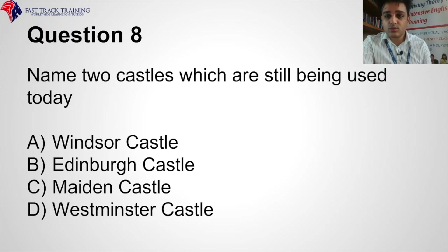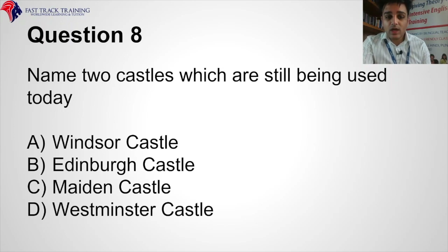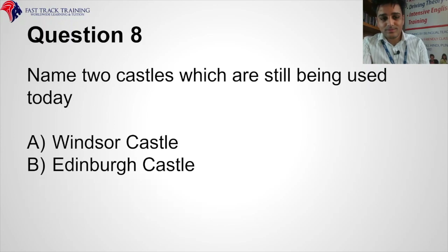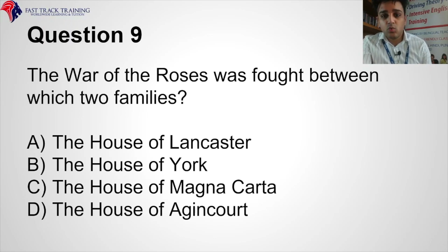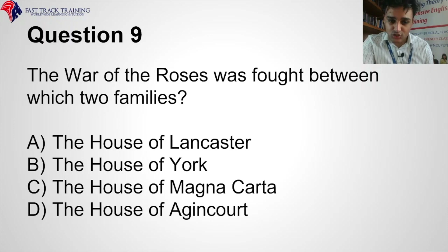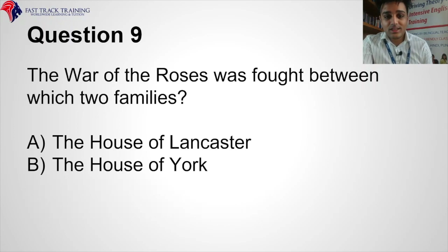Question eight: Name two castles which are still being used today. Windsor Castle, Edinburgh Castle, Maiden Castle, or Westminster Castle? The answer is Windsor Castle and Edinburgh Castle. Question nine: The War of the Roses was fought between which two families? The House of Lancaster, the House of York, the House of Magna Carta, or the House of Agincourt? The answer is the House of Lancaster and the House of York.